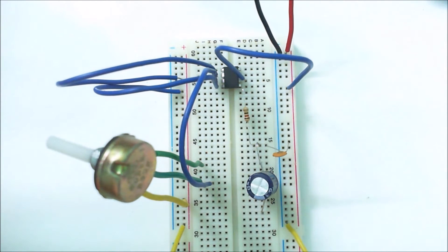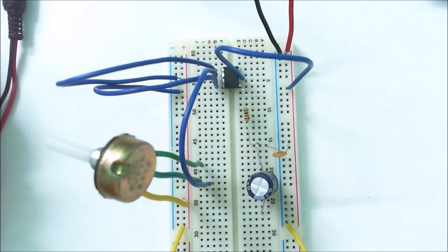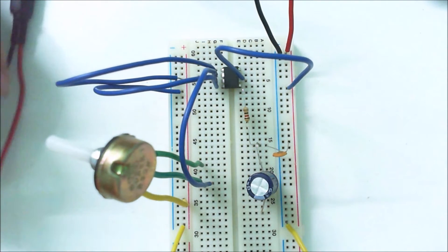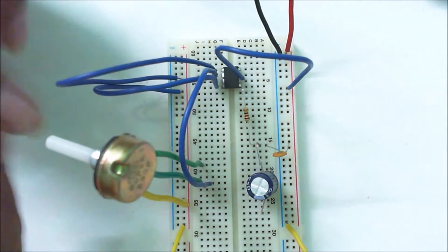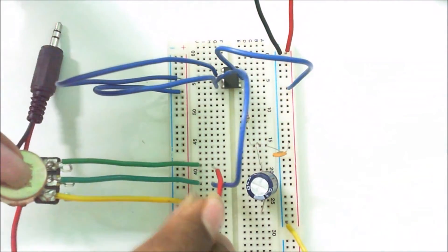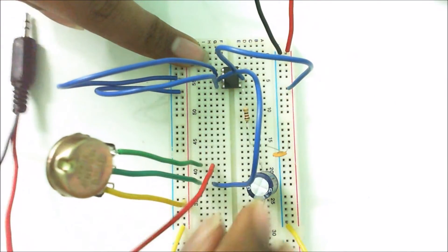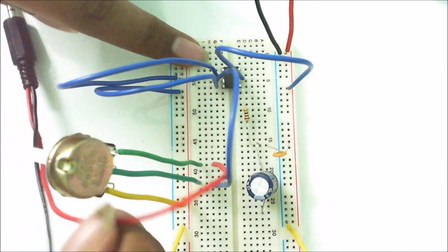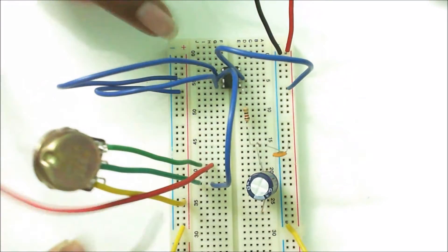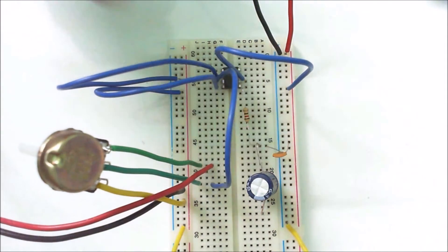Now connect the left or right pin of the 3.5mm jack to the first pin of the potentiometer. Now connect the ground terminal of the 3.5mm jack to the ground of the breadboard.